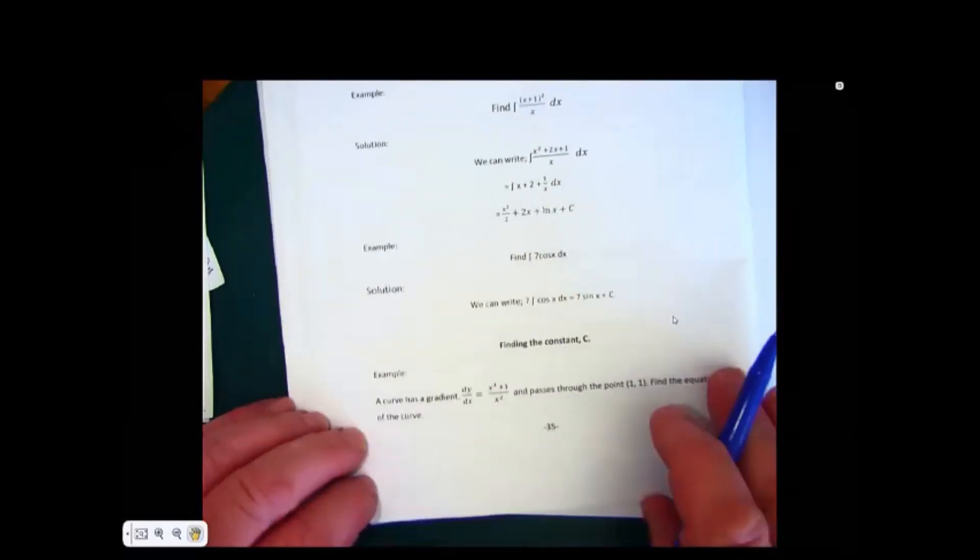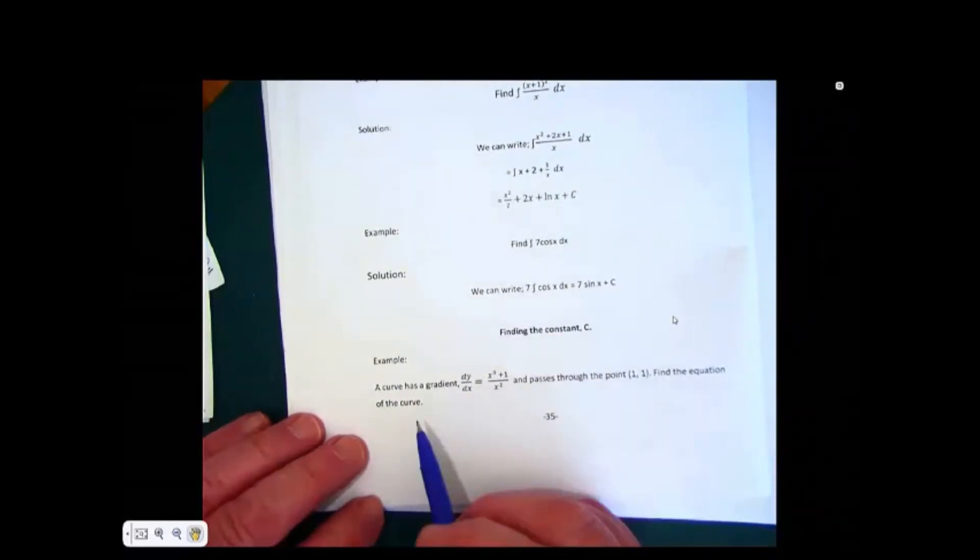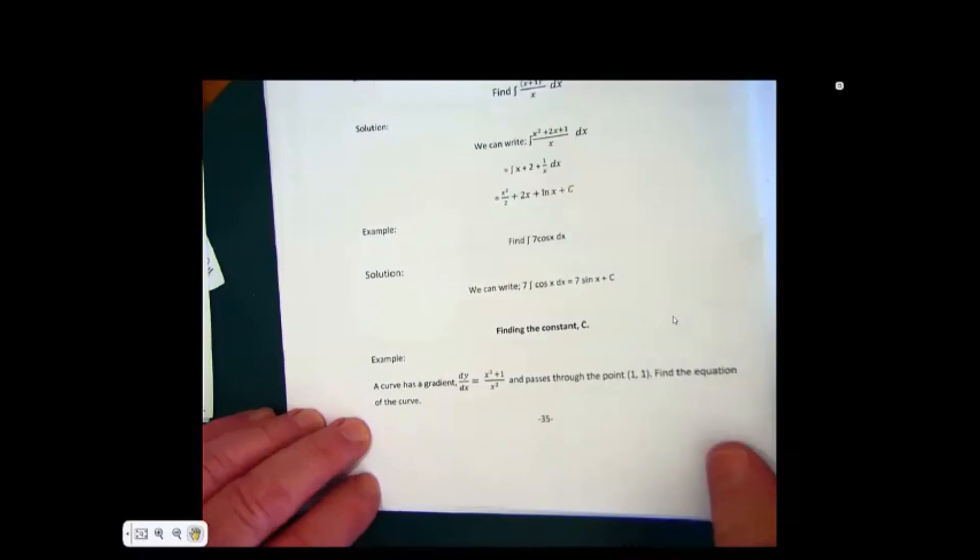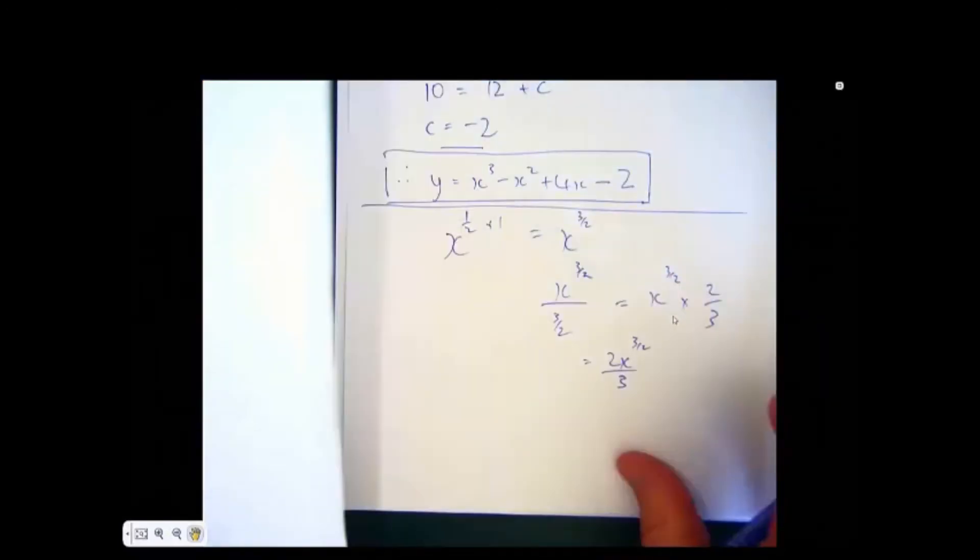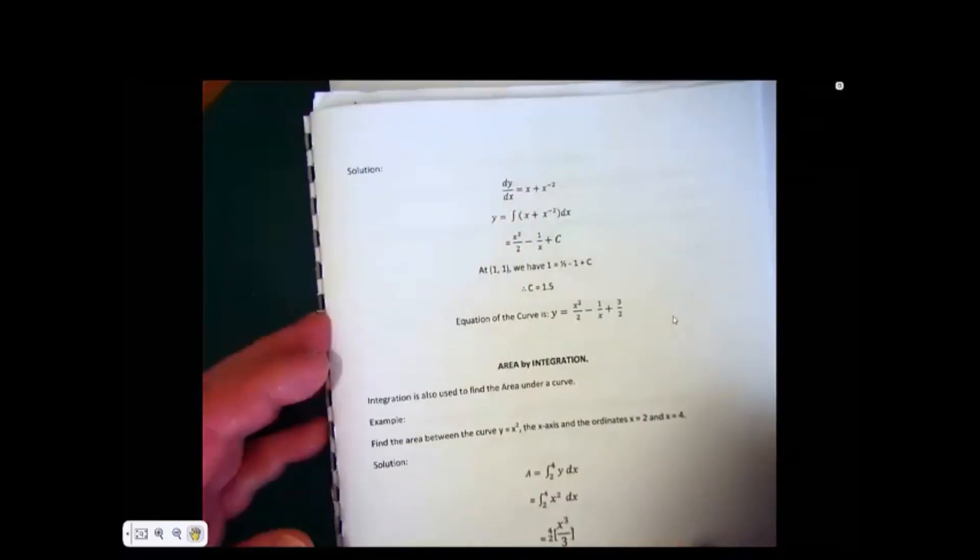Now, at the bottom of the page, it says, here's a way of finding the constant c. So if a curve has a gradient of x cubed plus 1 over x squared, it passes through this point 1, 1, find the equation of the curve. So let's see how this works out. We're trying to find the equation of the curve.